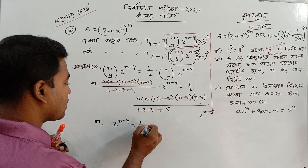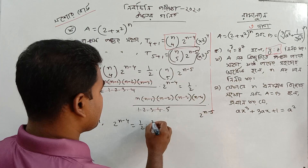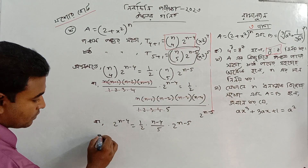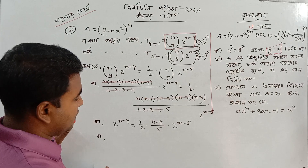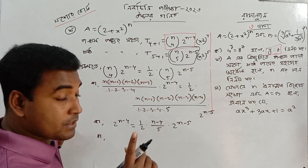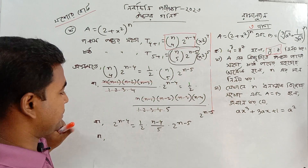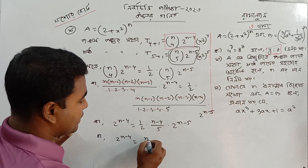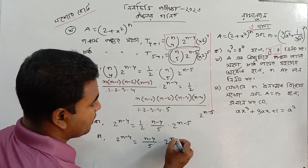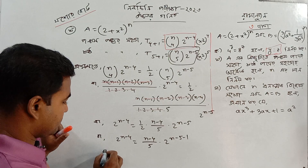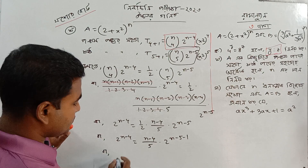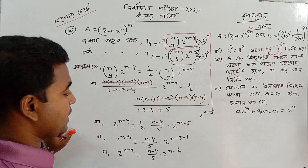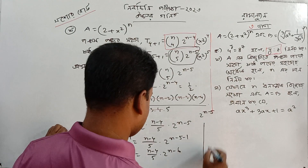n minus 1. Then we will take n minus 4 by 5. R is 2 to the power n minus 5. What do we do? We will take what we do in 20 seconds. In the 20 seconds, we will take n minus 1. We will take 2 into n minus 4. After the power n minus 2, we will take 2 to the power n minus 1.